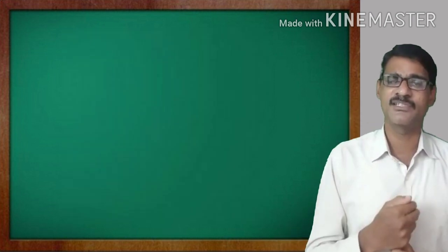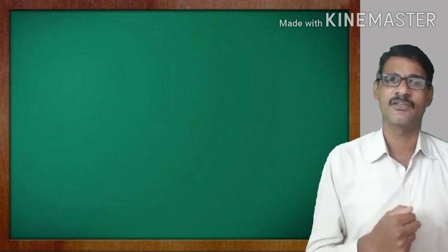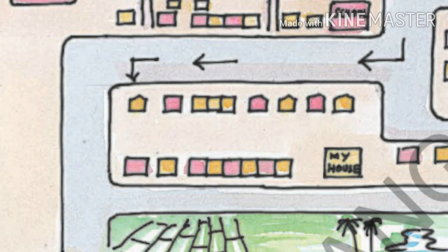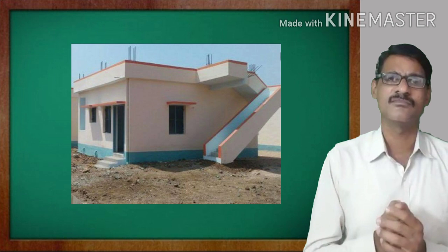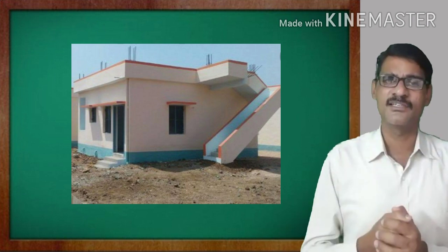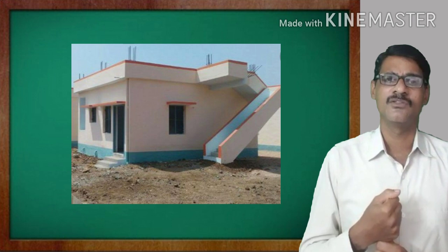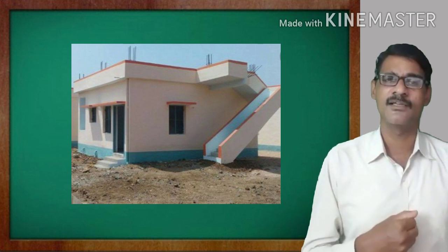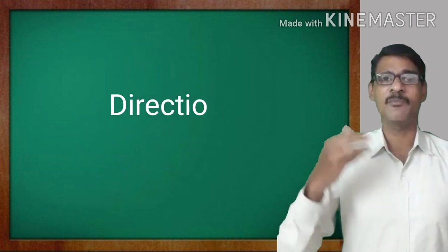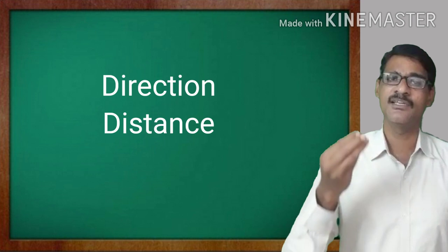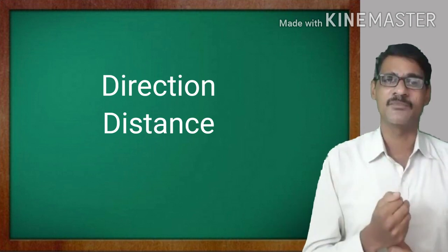By asking others, Laila started her journey. She walked and walked — the distance was more. Finally, Laila reached Mallika's house, but she was tired. She told the story of searching for the house. Mallika said sorry: 'I have not mentioned the directions and distance on that sketch map. I am sorry.'